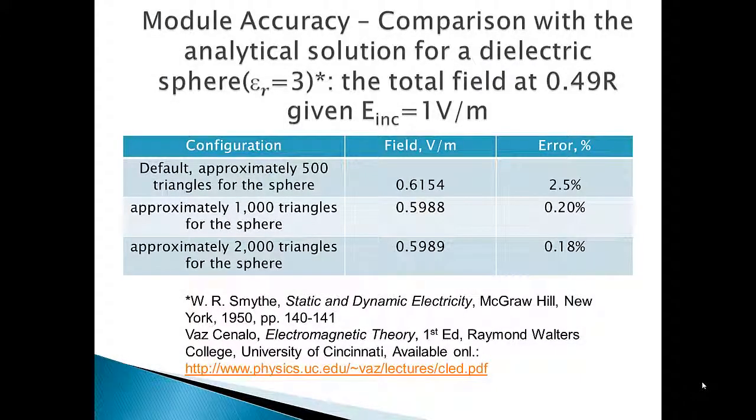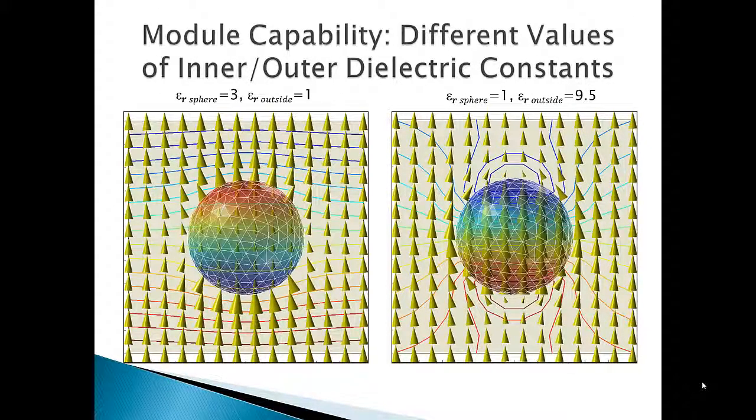Model accuracy is quite good as compared with the analytical solution for a dielectric sphere. The field near the interior boundary of the conducting sphere is compared with the analytical result, and increasing the number of triangles used decreases the relative error.